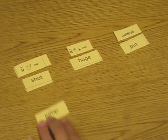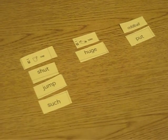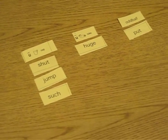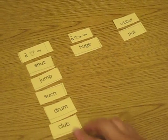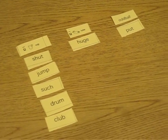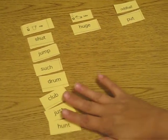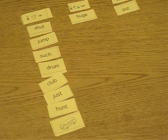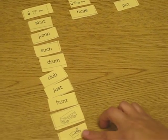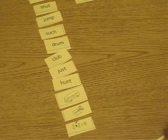Okay, in our short vowels we have jump, such, drum, club, just, hunt, bus B-U-S, cut C-U-T, and plus P-L-U-S.